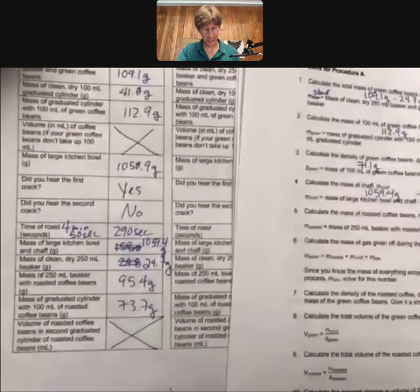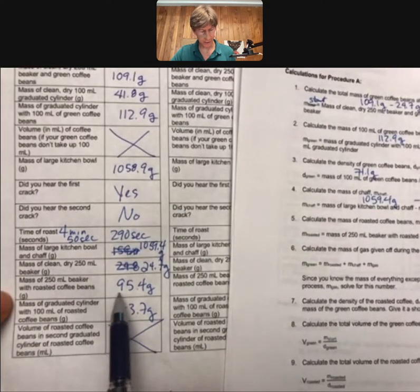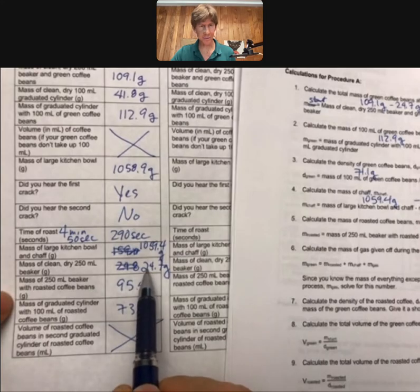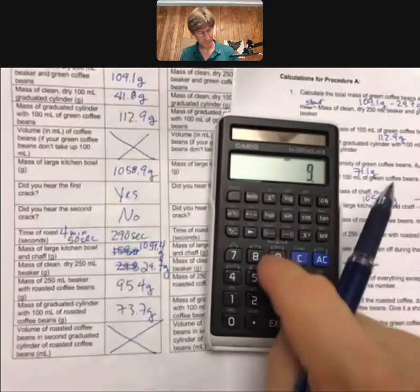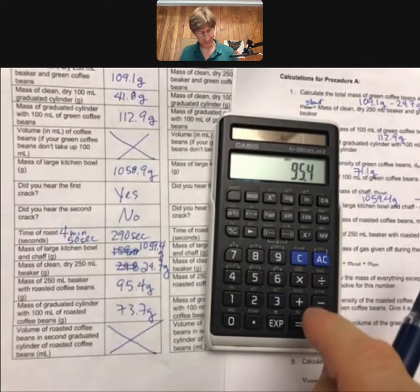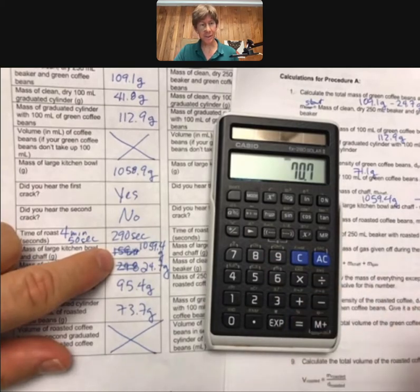Let's show the data for that. I've got mass of beaker with beans minus mass of beaker. So 95.4 minus 24.7, 70.7.